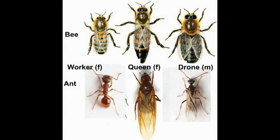Ants communicate using a trail of scent they leave behind on the ground. Bees communicate with a dance that specifies where to find faraway flowers that need to be pollinated. These parallels with human societies have long been an inspiration and subject of study.